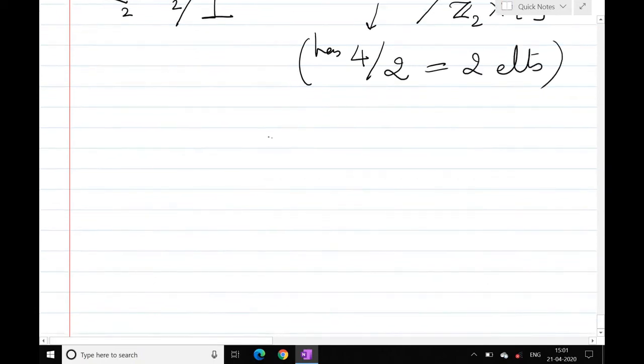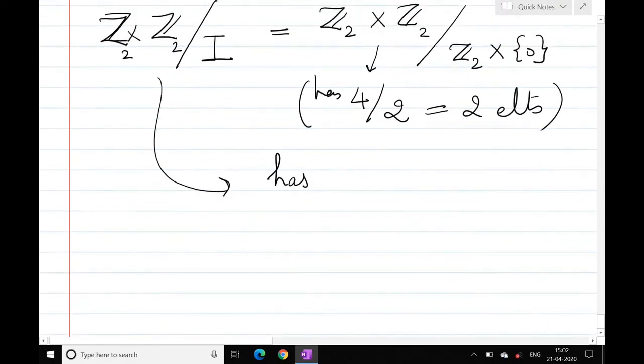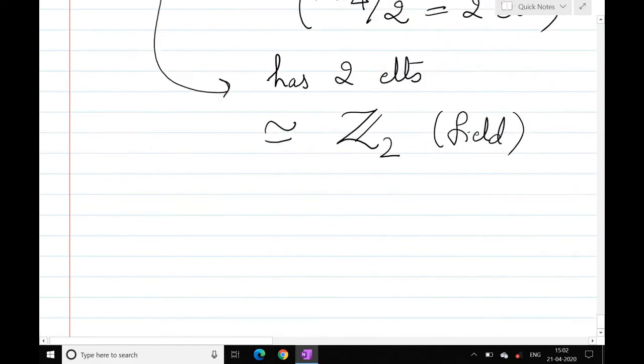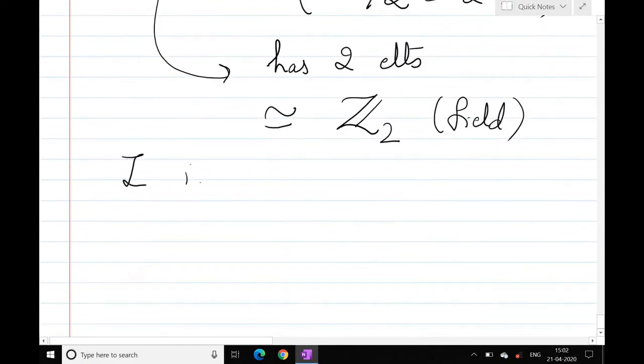So this means that Z2 cross Z2 by I has 2 elements and therefore it is isomorphic to Z2 and Z2 is a field. So this means I is not maximal, again by the same theorem.